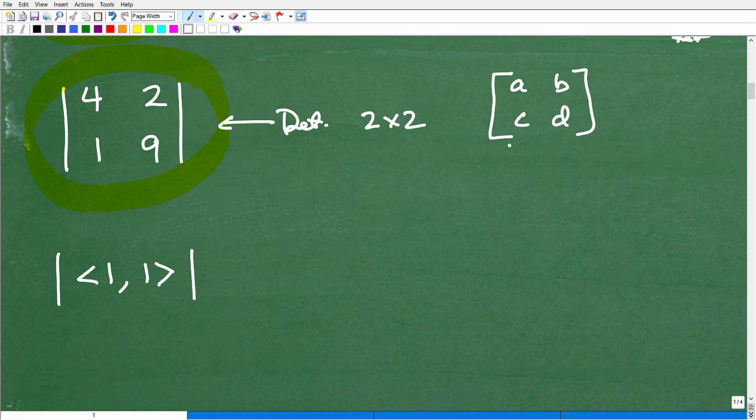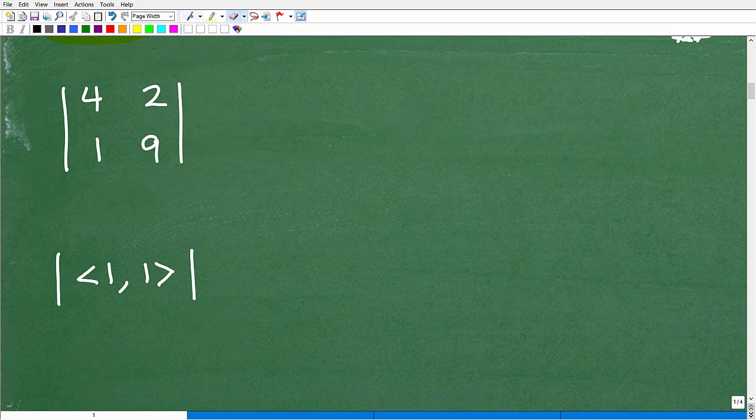You should have some introduction to it in the algebra 1 level as well. But when we're dealing with matrices, we can do all kinds of stuff with them. You can add them, you can find the inverse of them, potentially you can find the determinant. Okay? So this is what this means. We want to find the determinant of a matrix.